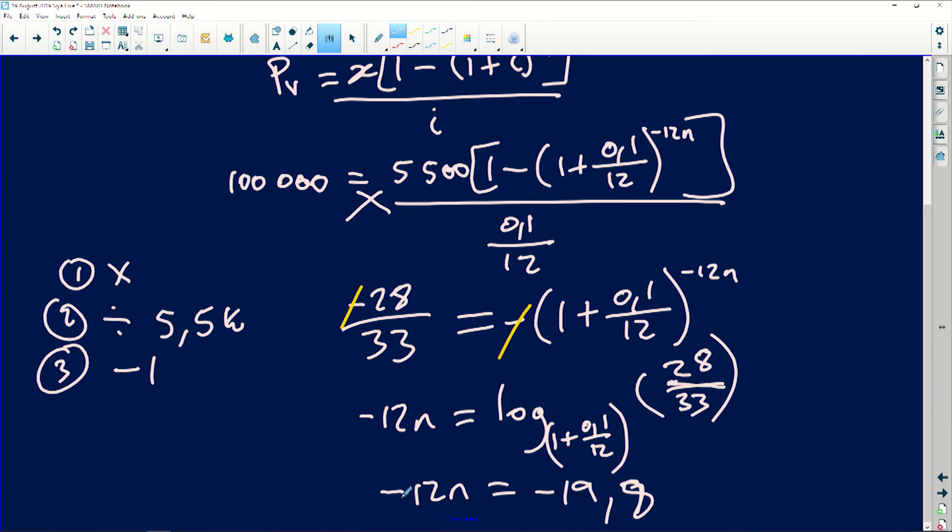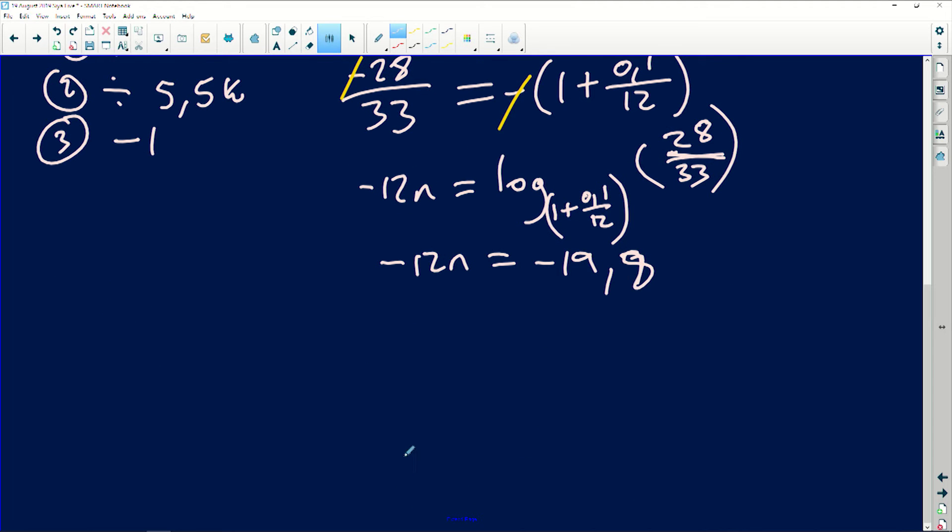Now I'm going to divide both sides by negative 12 and get rid of that negative. So this negative and that negative will be gone. So I have 12n is equals to 19.8. So therefore, it is going to be 19 months.